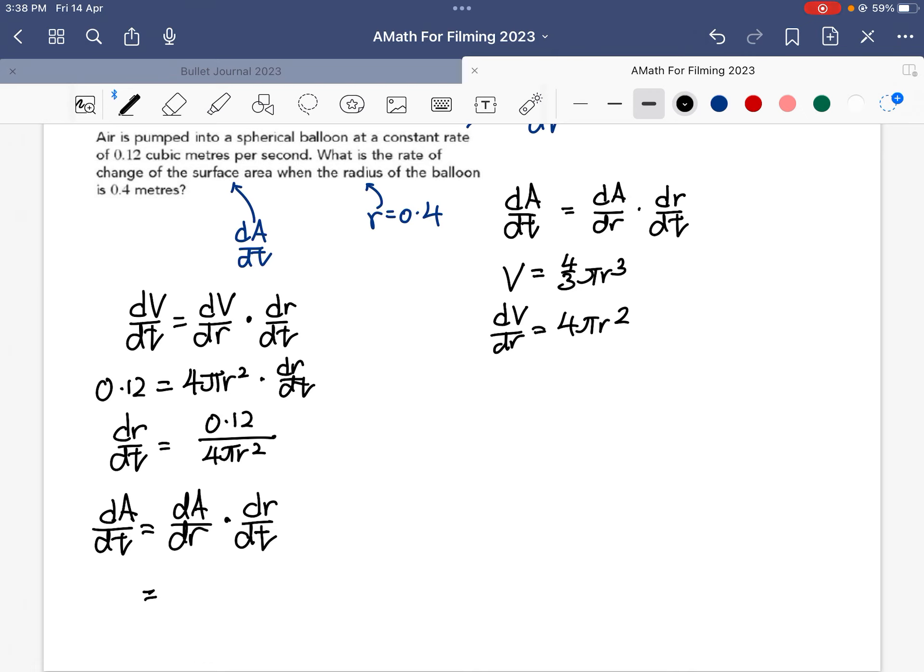Now, what I know is dA/dr. How do I get that? The area of a spherical balloon is 4πr². Again, you have to memorize this. So dA/dr is, differentiate, you bring down, is 8πr. So I have here 8πr multiplied by dr/dt.